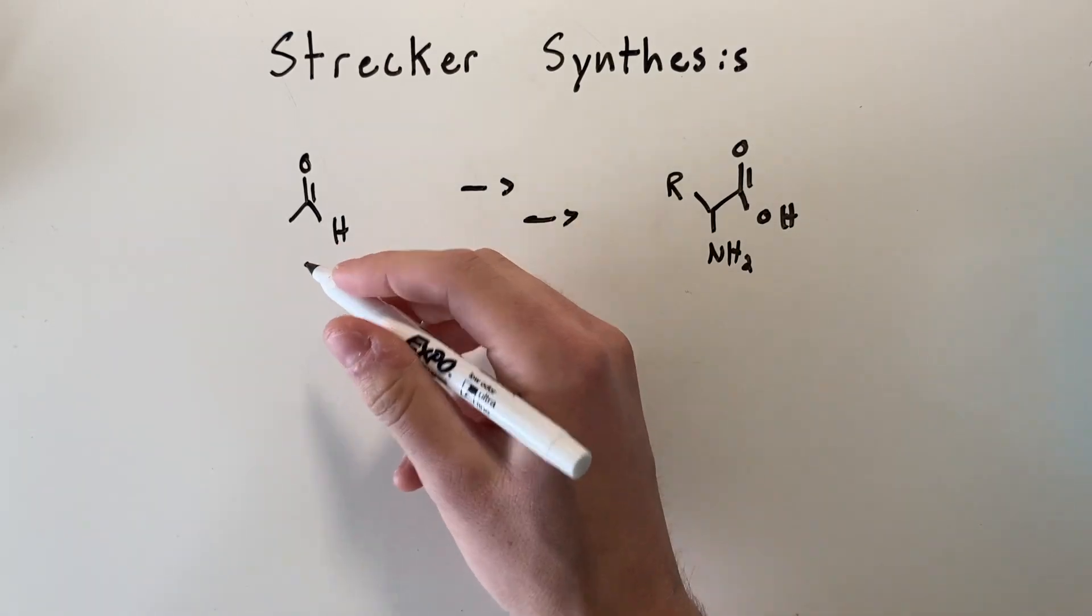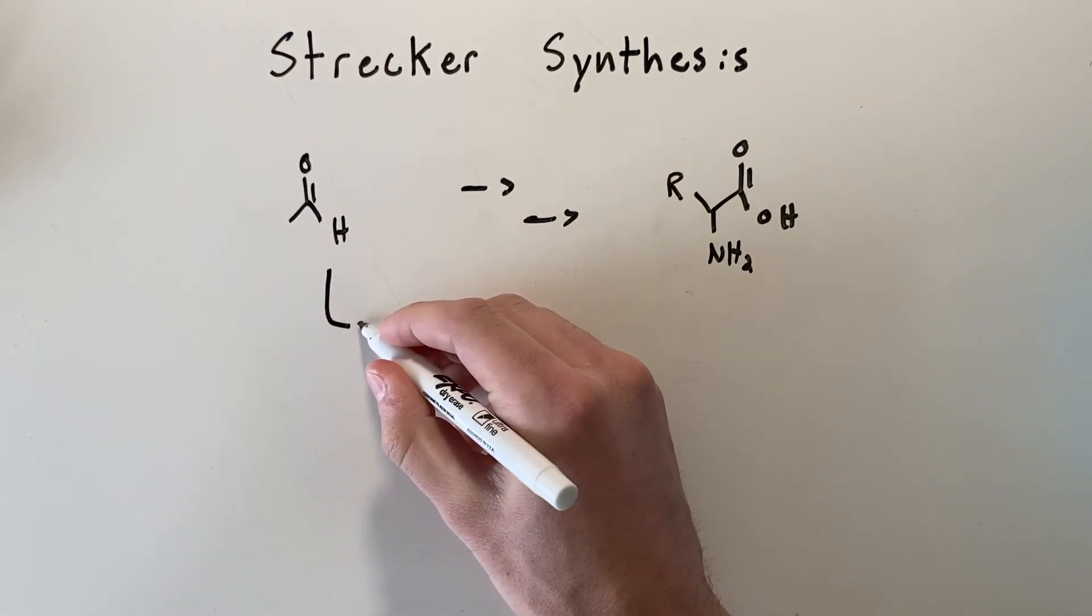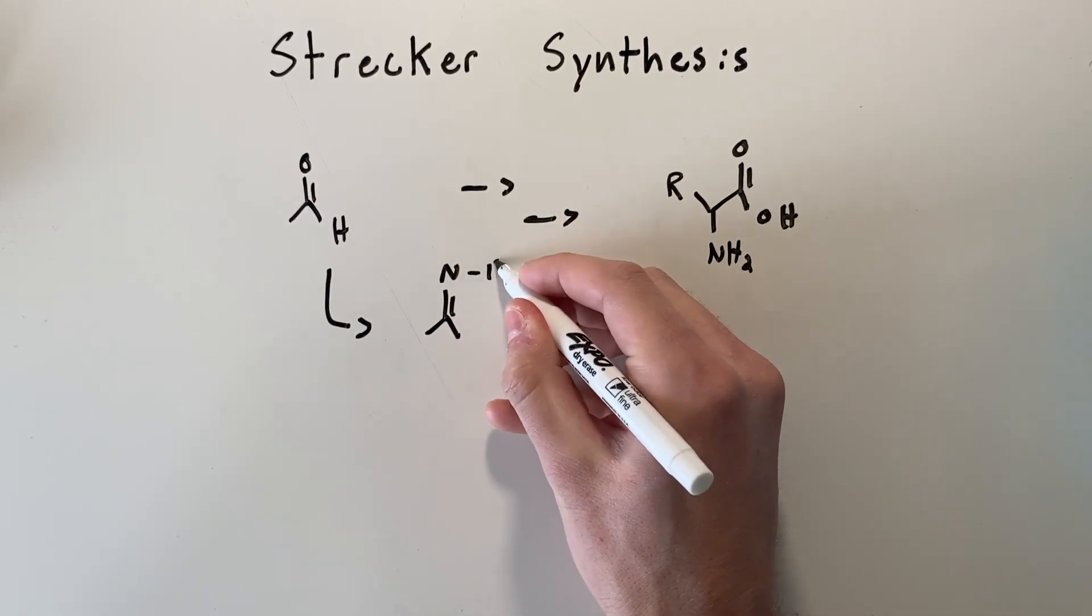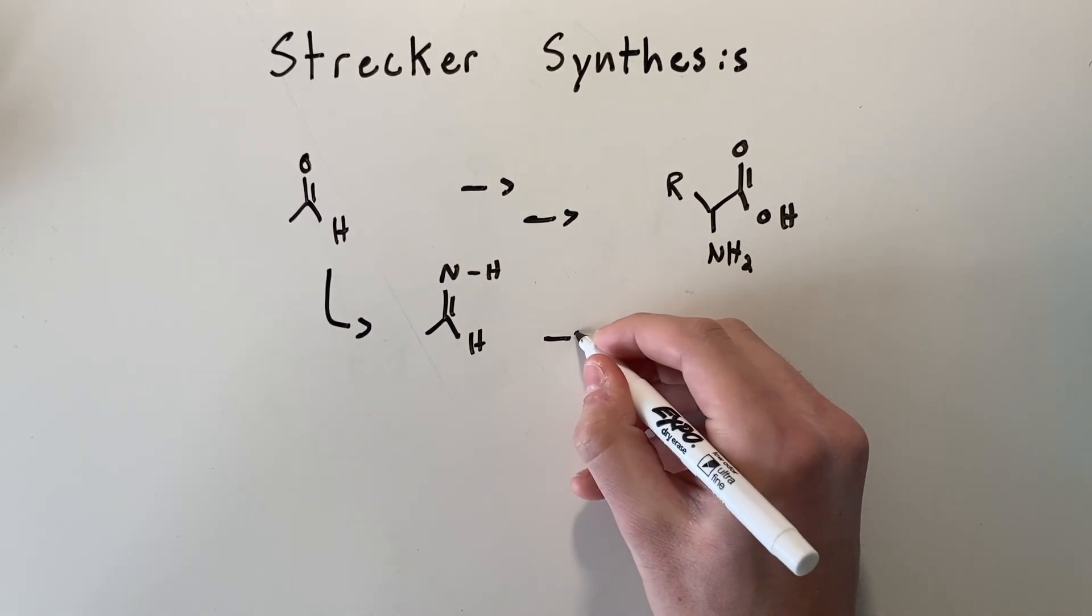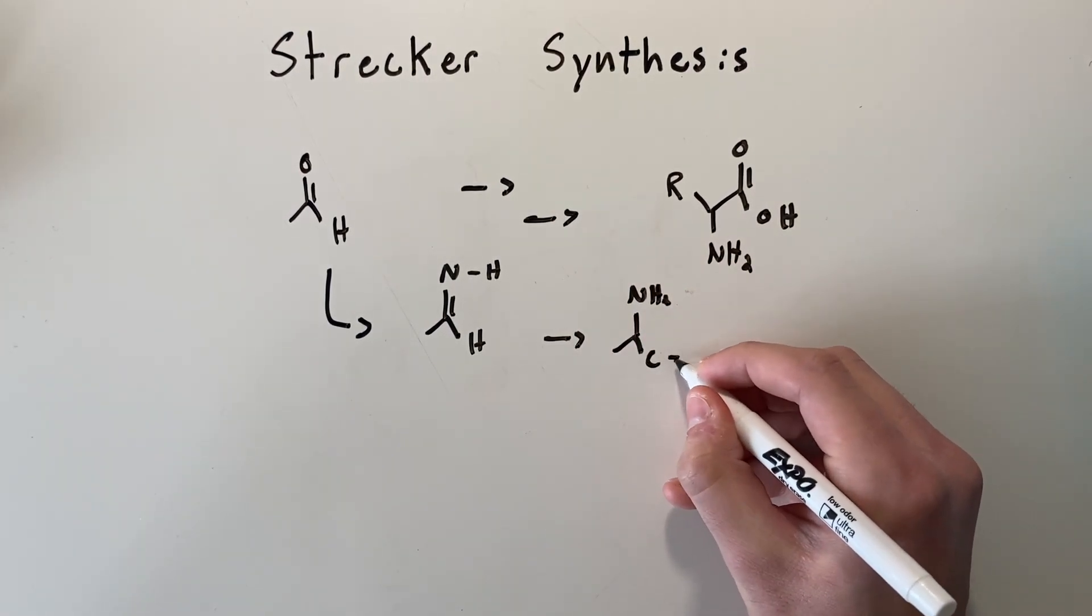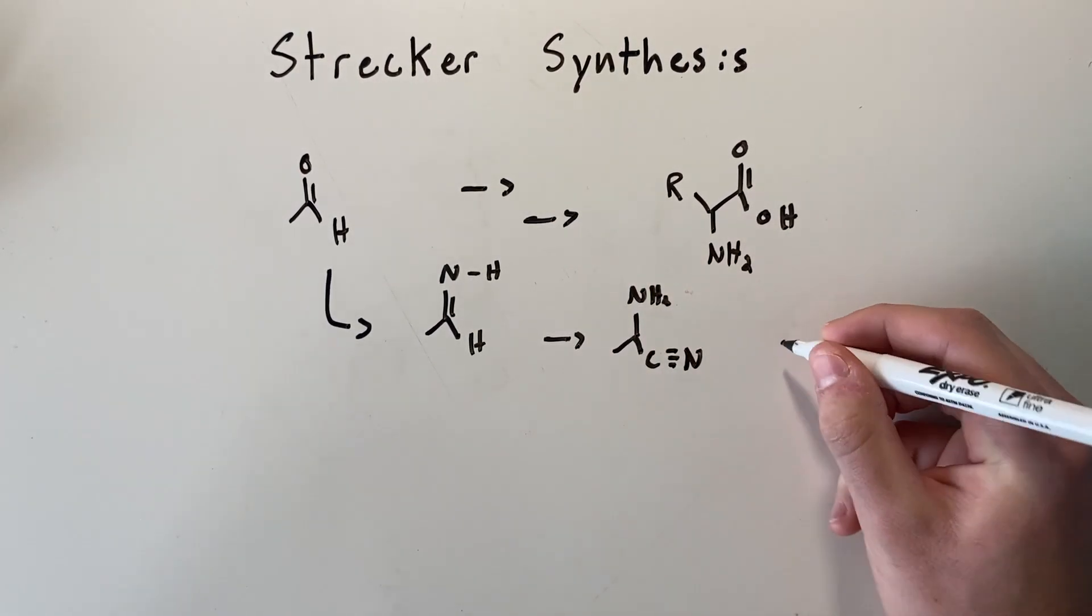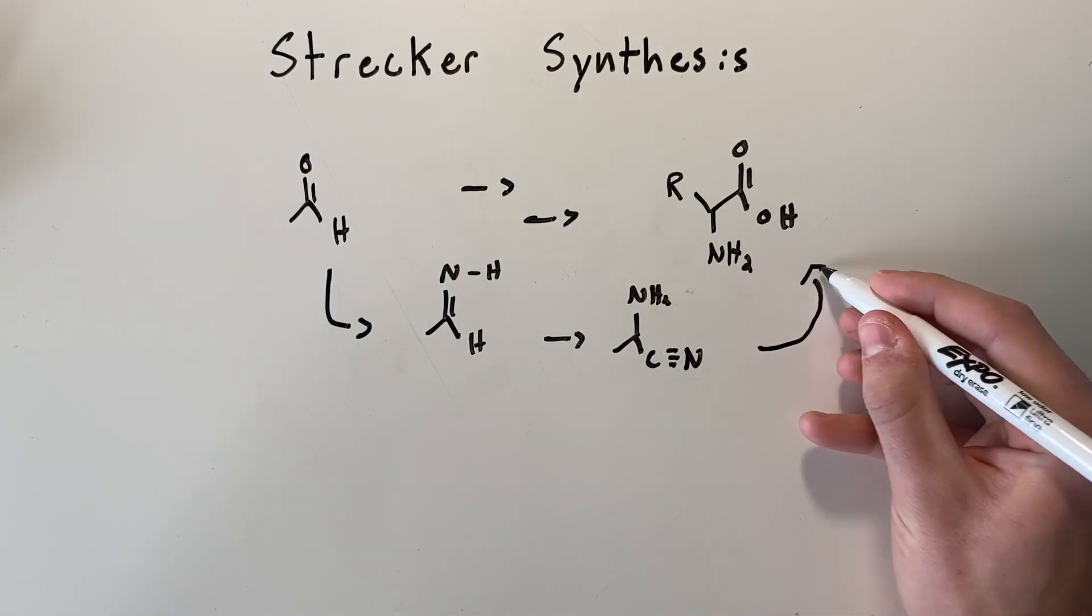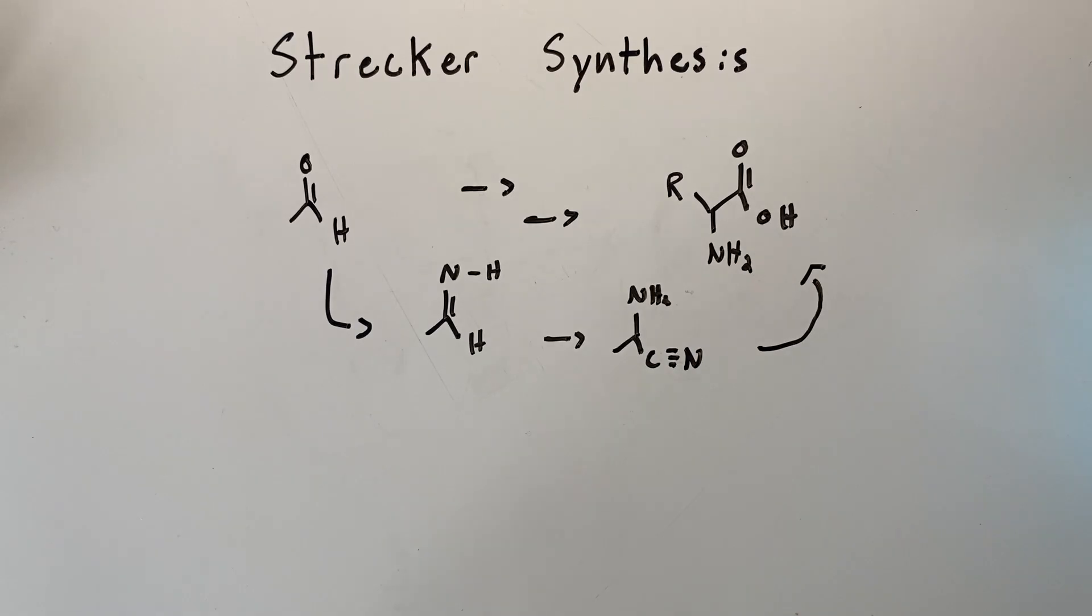The idea is we take the initial aldehyde, change it into an imine, then to a nitrile, which is a C triple bond N, and then use acid-catalyzed hydrolysis in order to get our final amino acid.